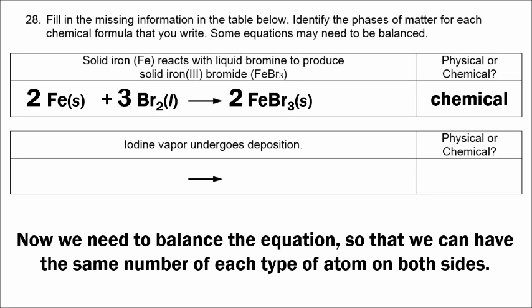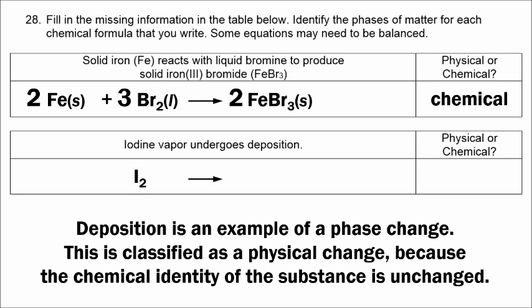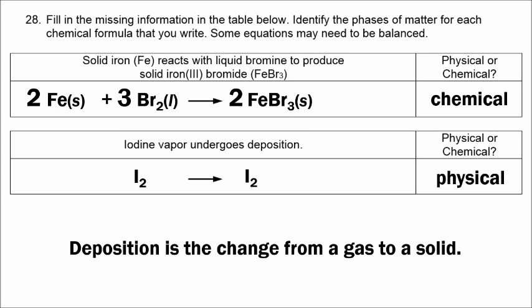The last example is iodine, written as I2, undergoing deposition. That is a phase change, so we still have I2 on the right — it is a physical change. Deposition is the change from a gas to a solid, so gas is on the left and solid is on the right.